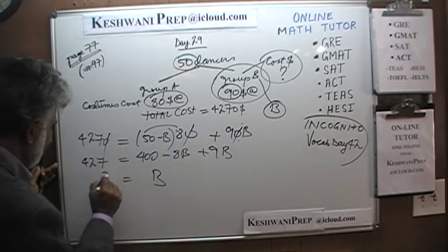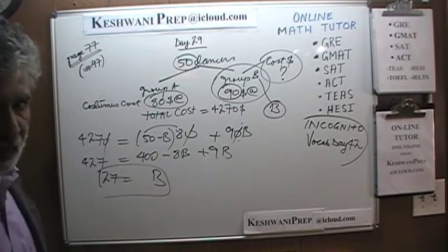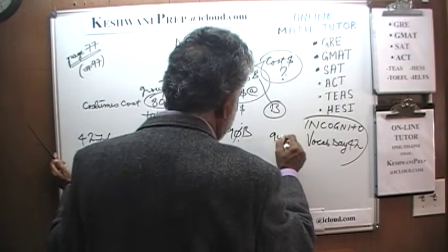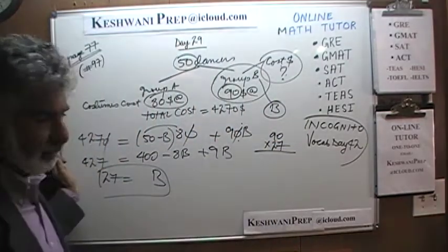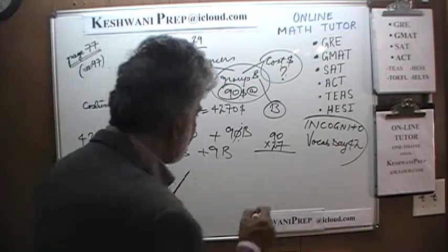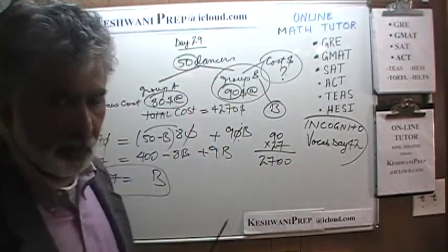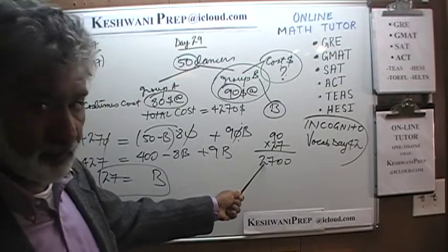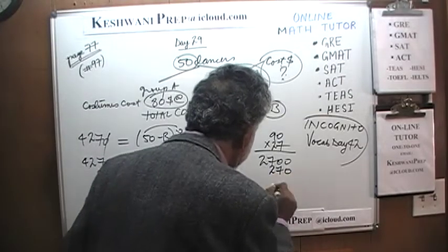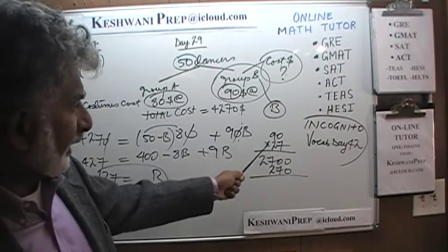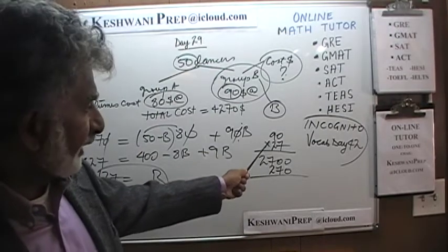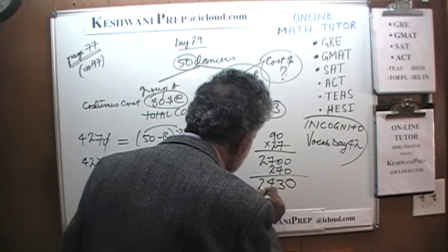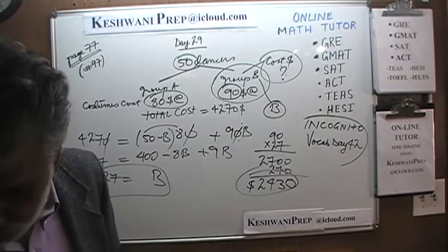9B minus 8B is just B. Subtract 400 from both sides and we are done: B equals 27. B is 27, and each of their costumes cost 90 dollars, so the total cost is 90 times 27. We know 100 times 27 is 2,700. We have only 90 twenty-sevens, so 90 times 27 is 2,700 minus 270, which gives us 2,430. The total cost for group B is 2,430 dollars.